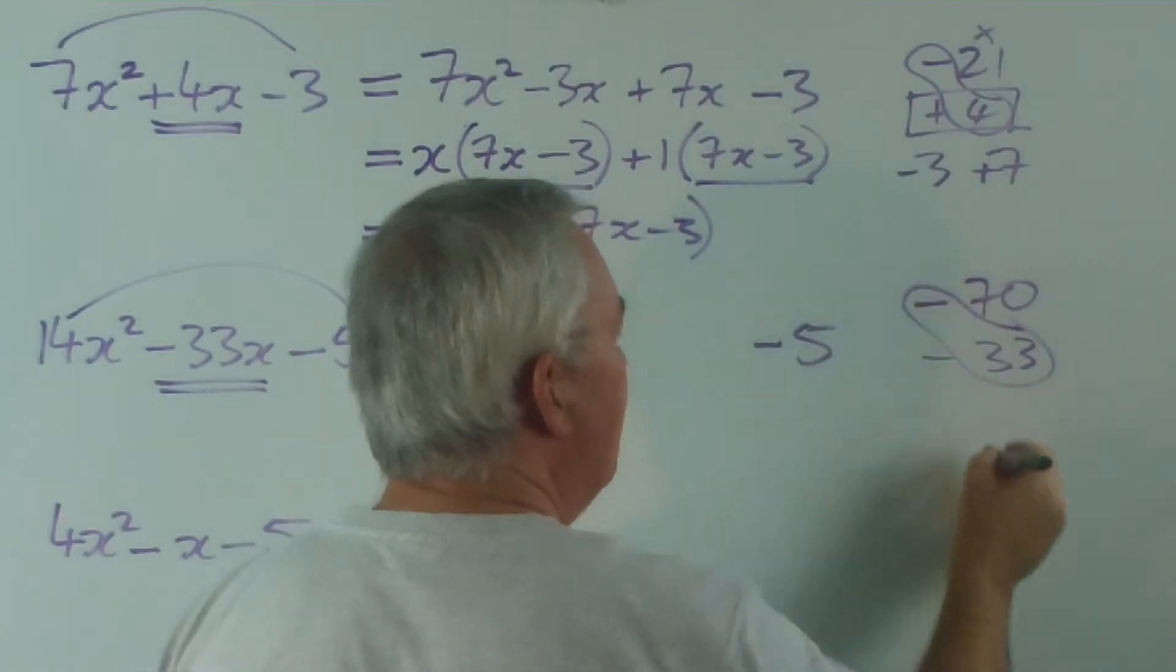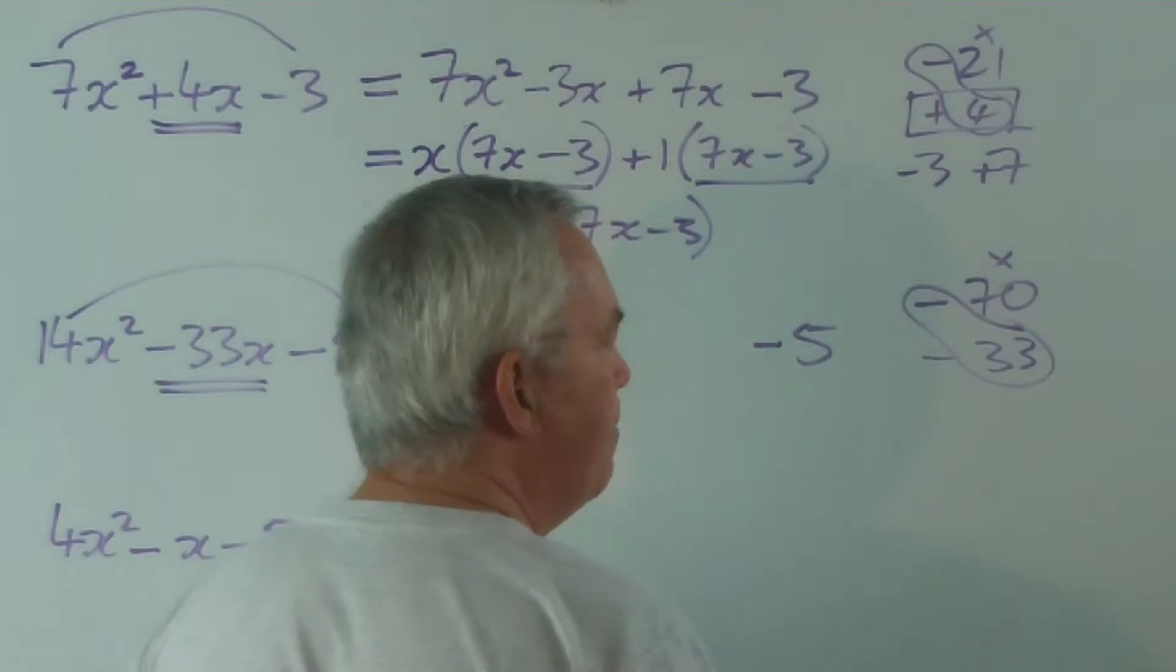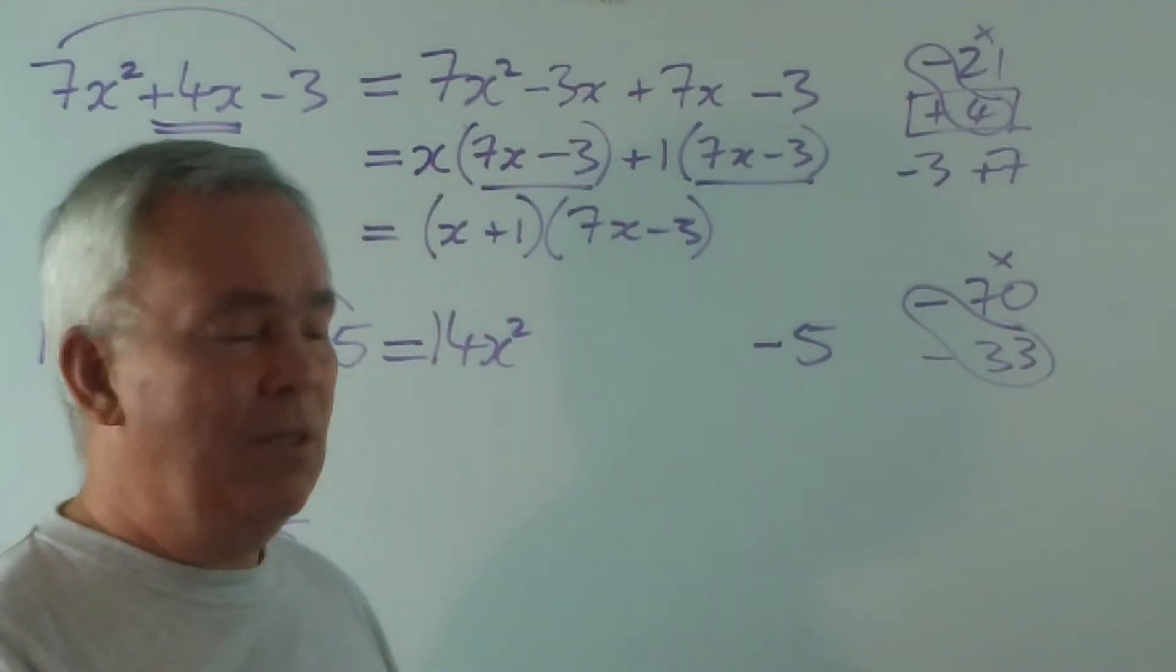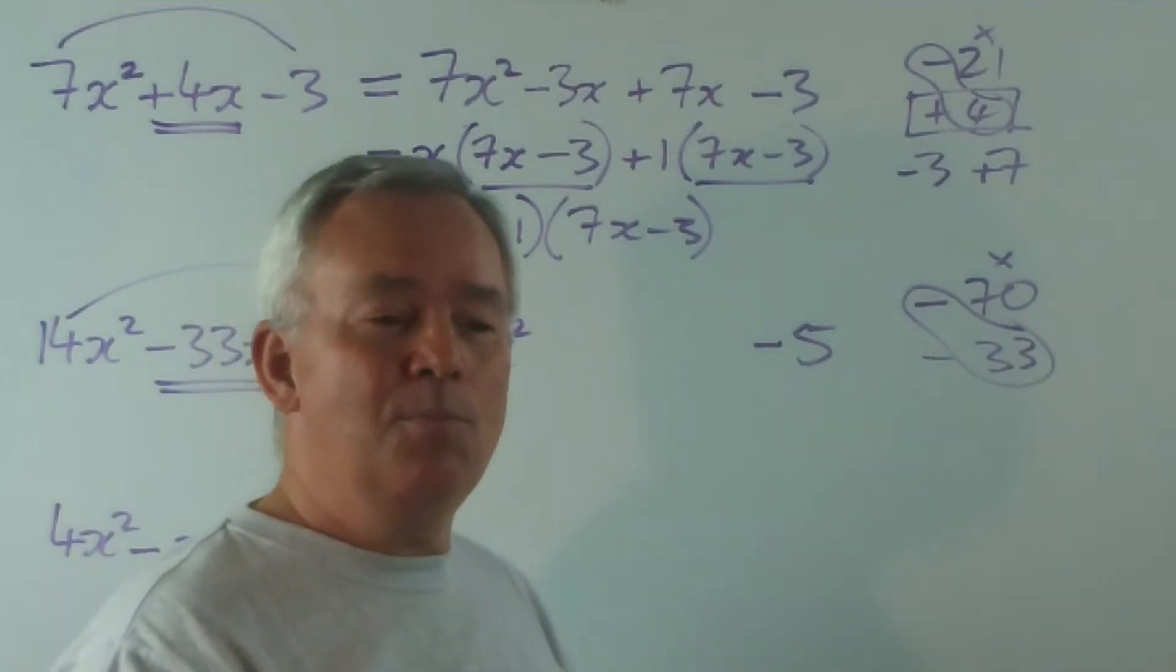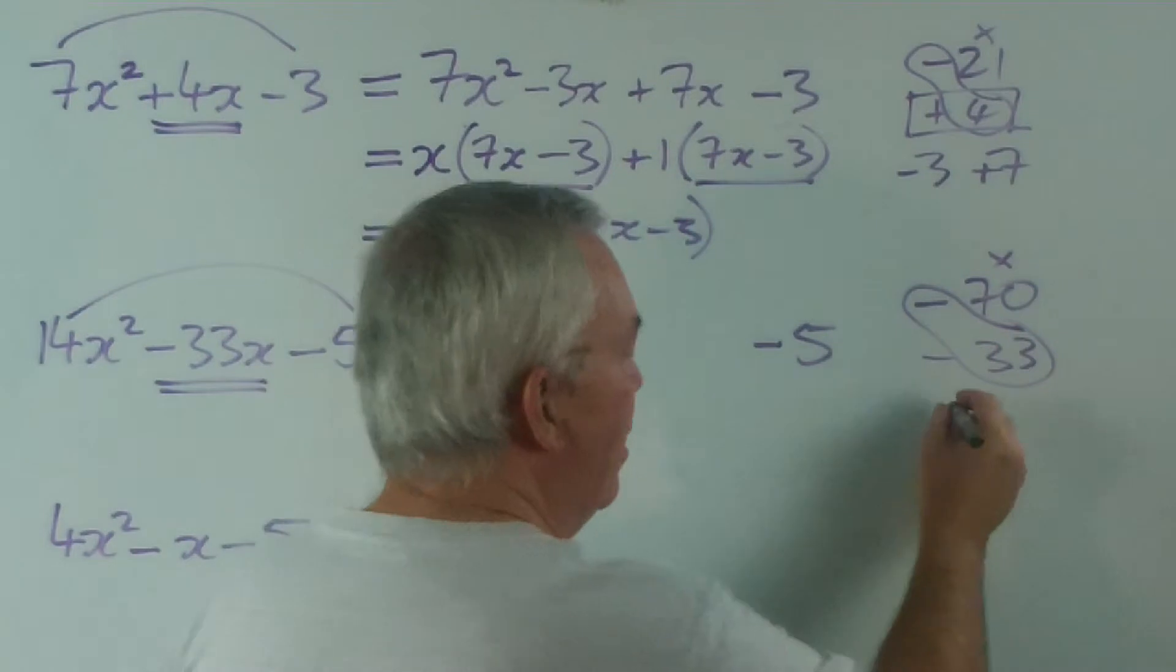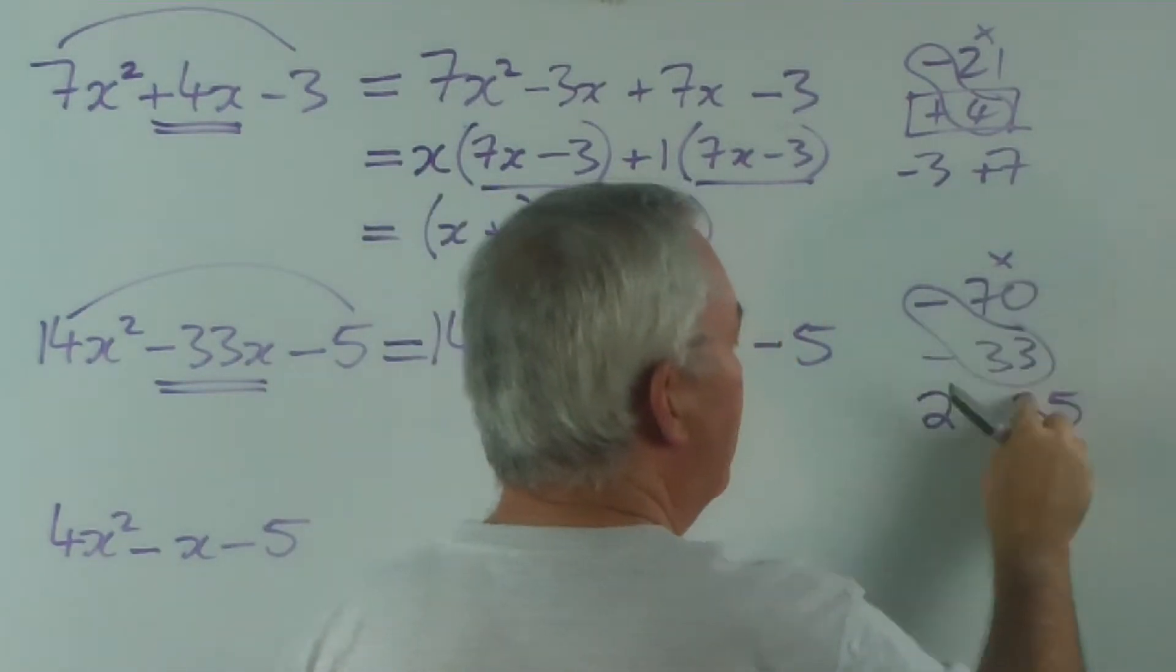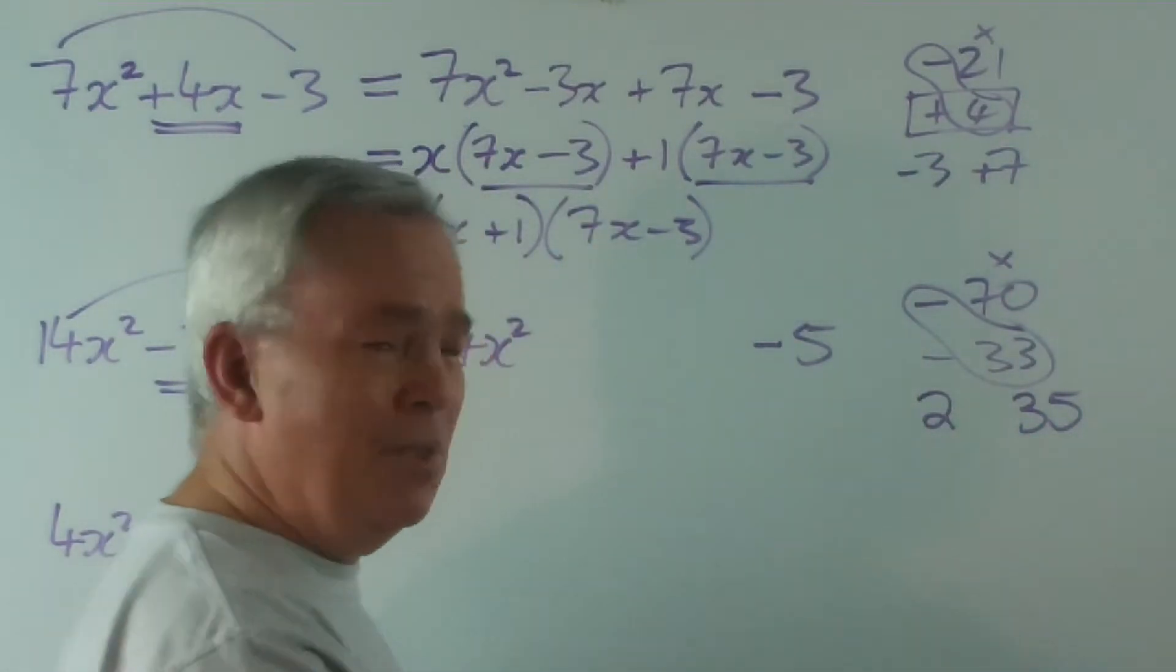And I draw my little loop and ask the question, what numbers multiply to make 70 that are 33 apart? Now, that's a long way apart. In fact, you might notice 33 is about half of what 70 is. And that's a bit of a giveaway. What is half of 70? It's 35. Well, 2 times 35 makes 70, and they're 33 apart. It wasn't as hard as it looked.